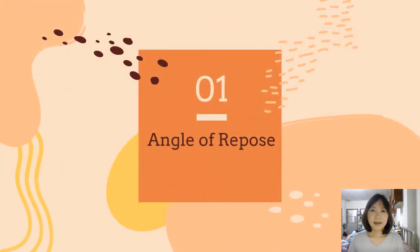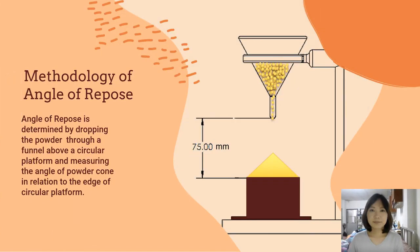Now let's look at angle of repose. Let me turn now to the methodology of angle of repose. Angle of repose is determined by pouring the powder through a funnel above a square platform and measuring the angle of repose in relation to the edge of the circular platform.